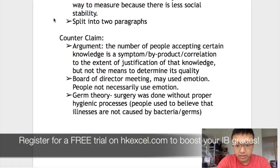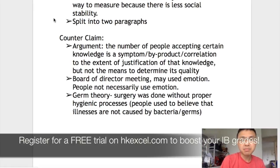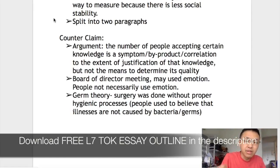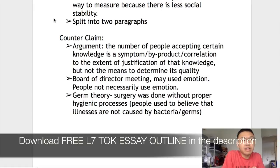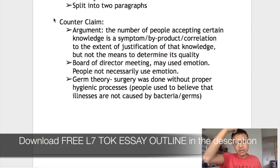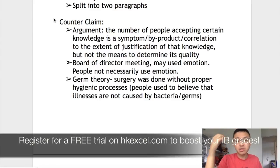Now, the counterclaim. Just now we said the quality of knowledge is best measured by how many people accept it. But the counterclaim is that the number of people accepting a knowledge is a symptom of the extent of justification — it's more likely to be justified if more people accept it. However, the fact that more people accept it does not inherently determine quality. There are many examples of knowledge accepted by many people that are in fact unjustified and proven untrue later on.